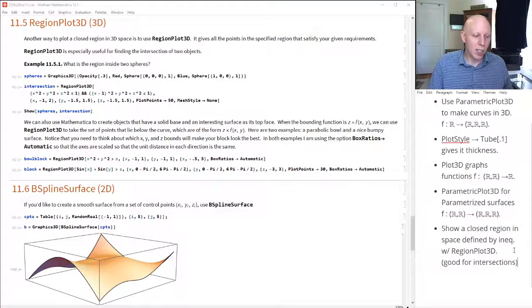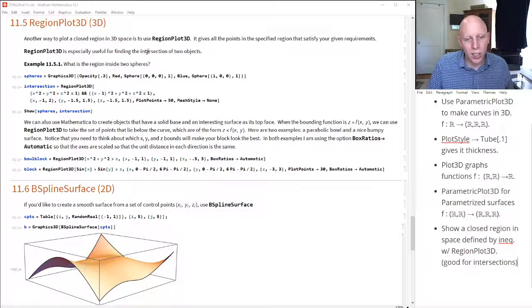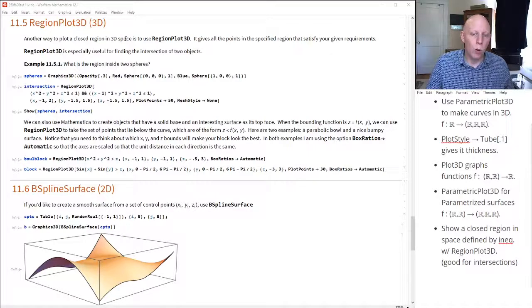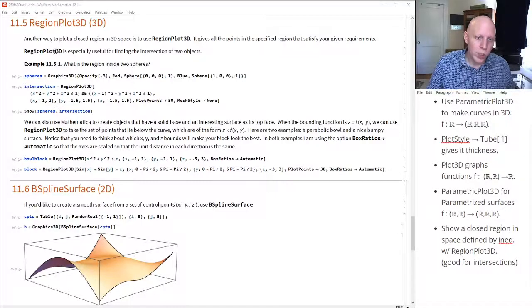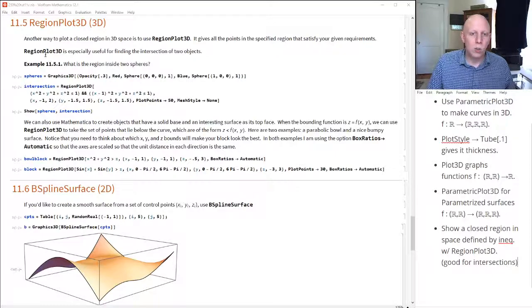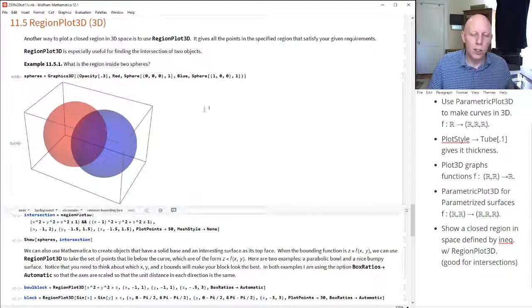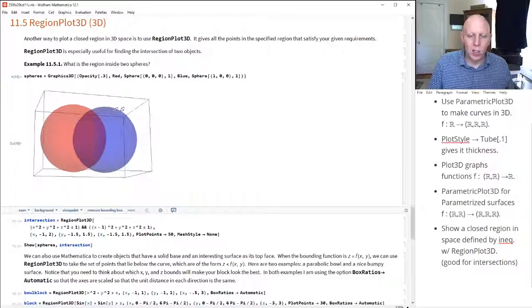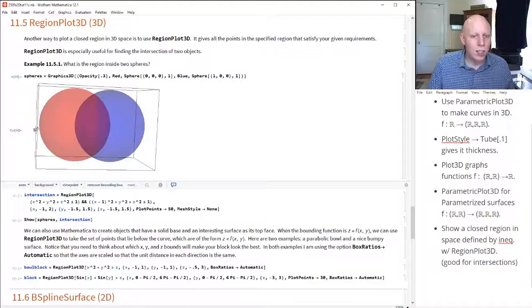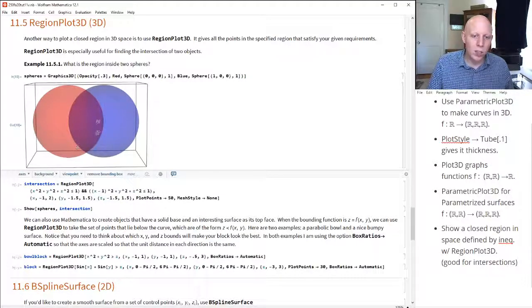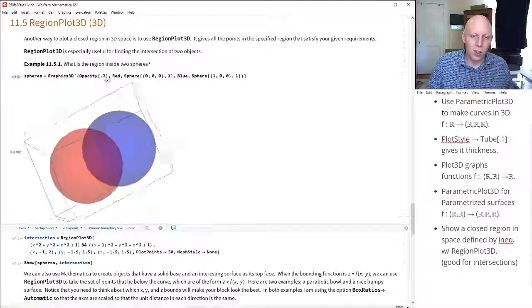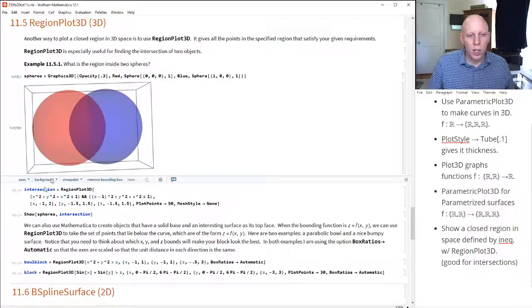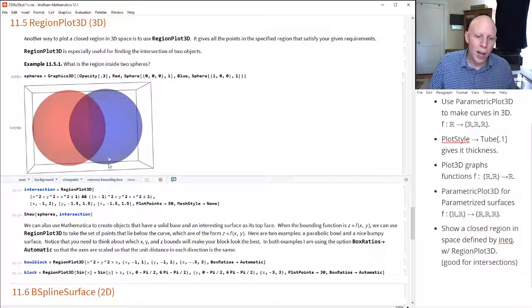So another thing you can do is, let's say we'd like to talk about a closed region that's defined by some inequalities or by some conditions. Then just like we used region plot before, we can use region plot 3D to figure out the intersection of two objects. So here's an example. What's the region inside two spheres? So here's our two spheres. And what we'd like to know is can we just create the region that's in between these two spheres? So we've got, it's kind of like a three-dimensional Venn diagram here.